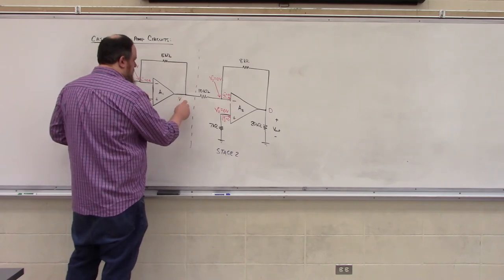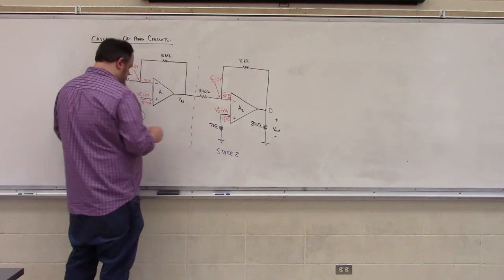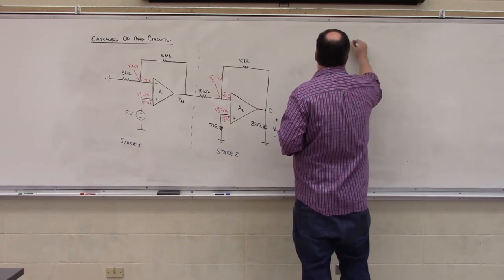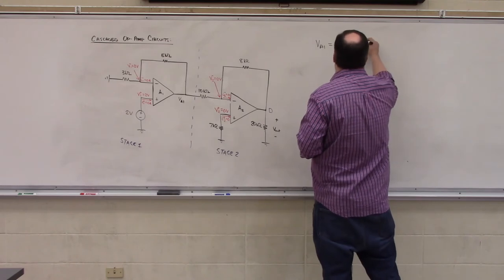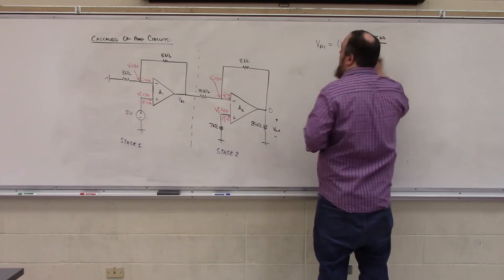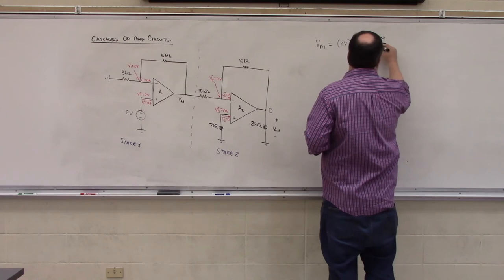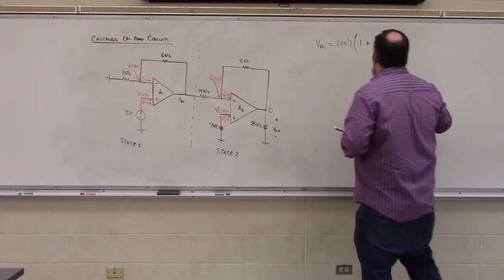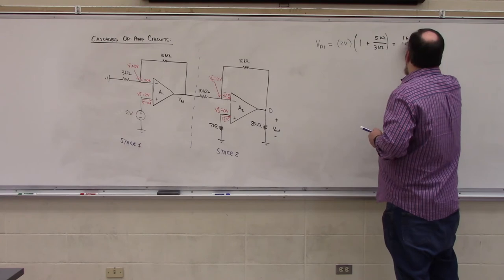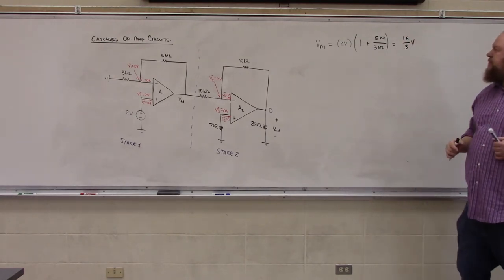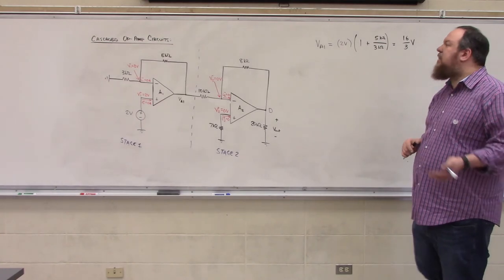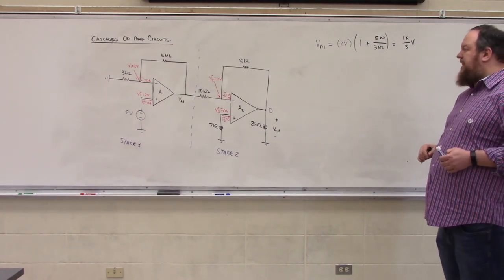Our output voltage, which I'm going to call VA1, is given by 2 volts, our input voltage, multiplied by a factor of 1 plus R2, which is 5 kilo ohms, divided by R1, which is 3 kilo ohms. So that would be 2 times 8 over 3 is 16 thirds of a volt. That answer exactly matches what we found for the nodal voltage VB doing the problem using nodal analysis.